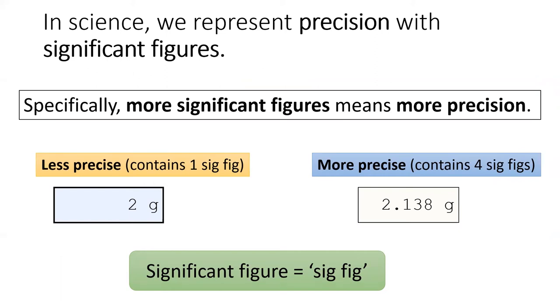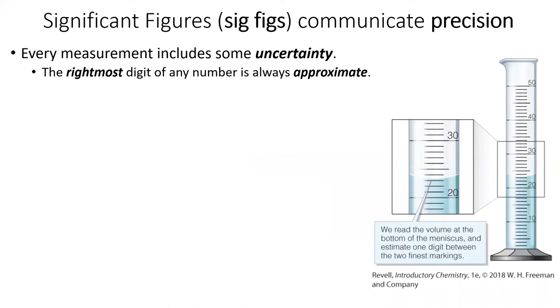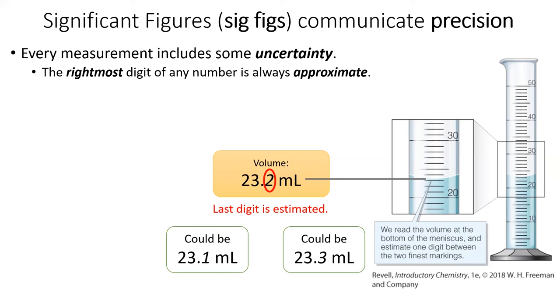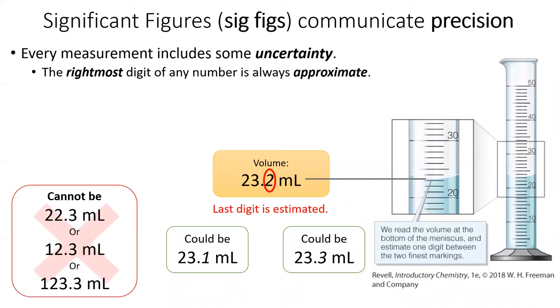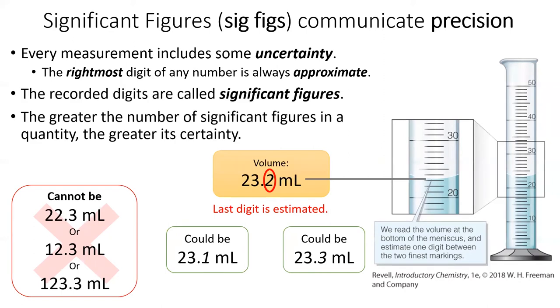Scientists use the word significant figures to represent the precision of a measurement. Every measurement contains uncertainty, and the last digit of any measurement is estimated. For example, in this volume measurement, I know the volume is at least 23 milliliters, and I've estimated the last digit to be 0.2. It's possible that the true value is closer to 23.1. It's possible that the true value is closer to 23.3. But it's not possible for the true value to be 22.3, or 12.3, or 123.3. The digits that we write down are called significant, and the greater the number of significant digits, the closer it is to the true value.